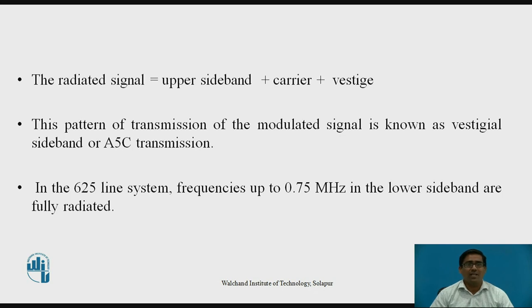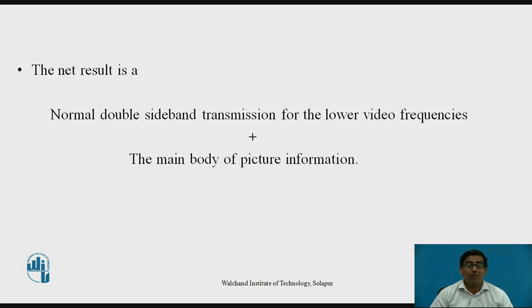In the 625-line system used in India, frequencies up to 0.75 MHz in the lower sideband are fully radiated. Therefore, the net result is that the transmission of the radiated signal is normal double sideband transmission for the lower video frequencies and the main body of the picture information. The main body of the picture information contains the message, and the normal double sideband transmission contains the upper sideband and the remaining part of the lower sideband.